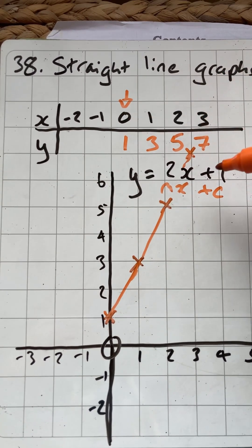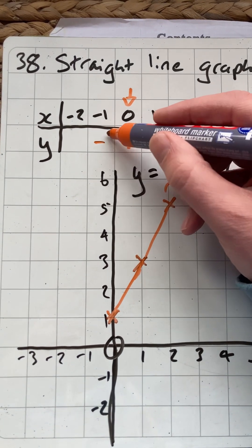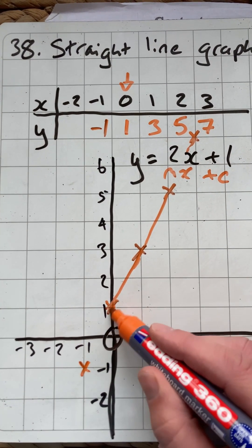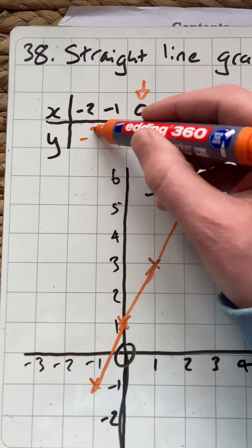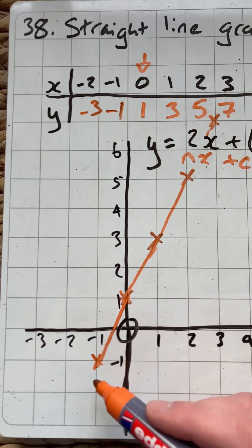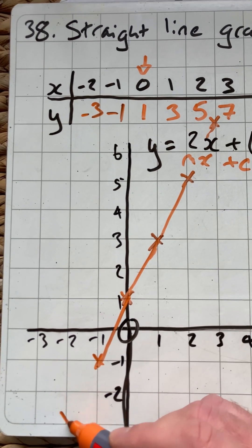2 times minus 1 is minus 2, plus 1 is minus 1. That'll be there. And then minus 2 times 2 is minus 4, plus 1 is minus 3. So we're going to get down to there.